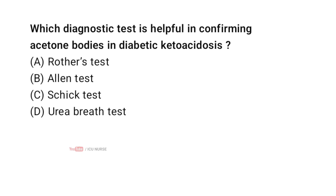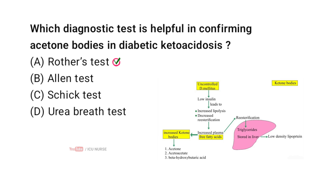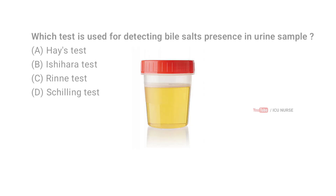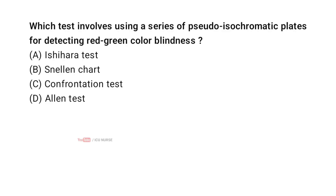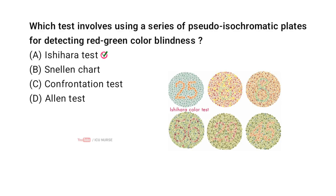Which test is useful in confirming acetone bodies in diabetic ketoacidosis? Correct answer A: Rothera's test. Which test is used for detecting bile salts presence in a urine sample? Correct answer A: Hay's test. Which test involves using a series of pseudo-isochromatic plates for detecting red-green color blindness? Correct answer A: Ishihara test.